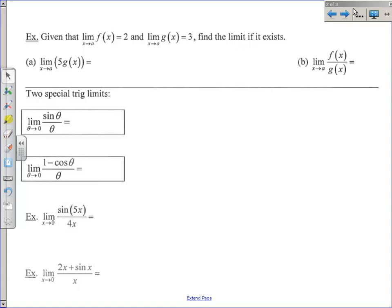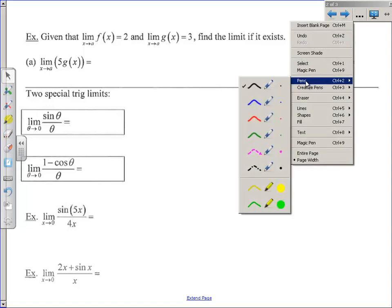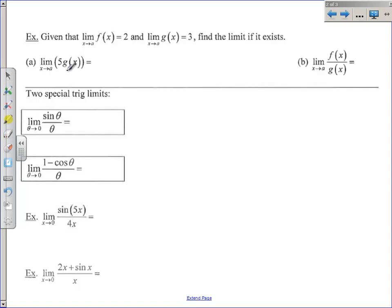On part a, we have the limit as x approaches a of 5 times g(x). I'm going to refer to the constant multiple rule, number 5 on your list, which says that I'm going to do 5 times the limit as x approaches a of g(x). You can move this limit inside, and once you find that limit, you multiply it times 5. It tells me that limit as x approaches a of g is 3, so this works out to be 5 times 3, or 15. That's the answer to the first one.